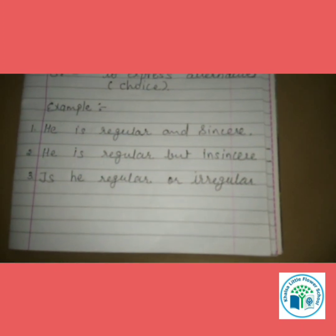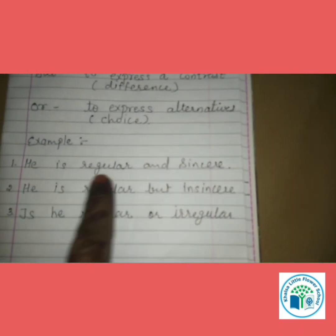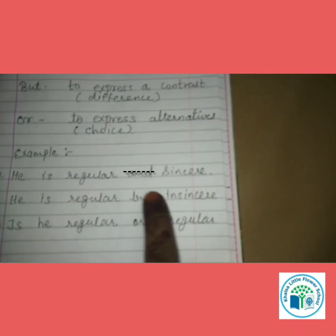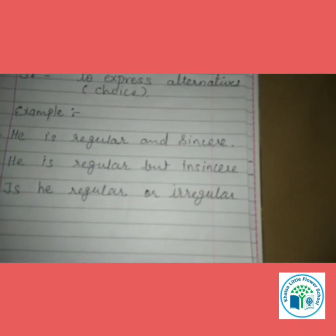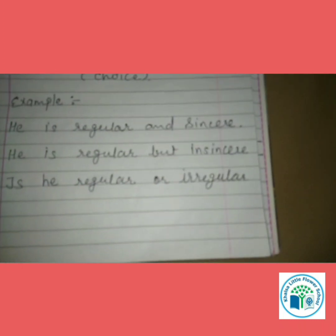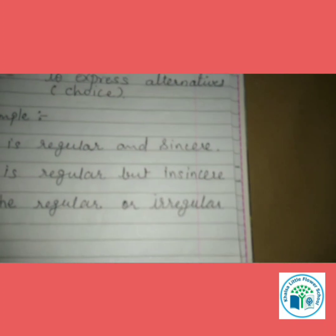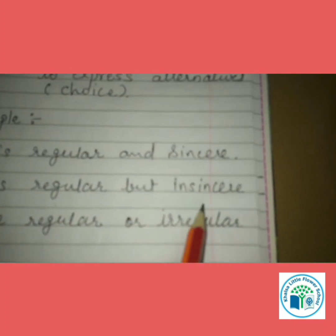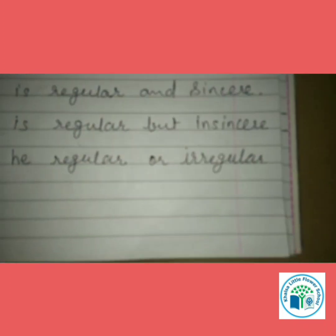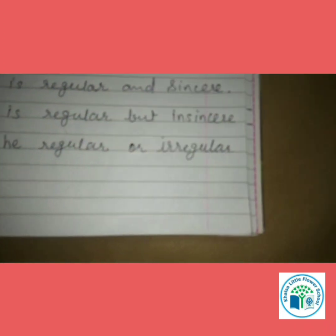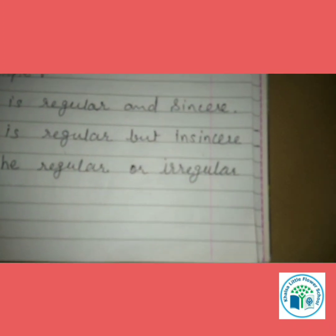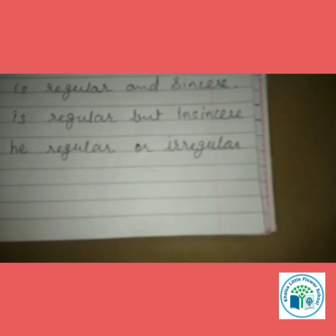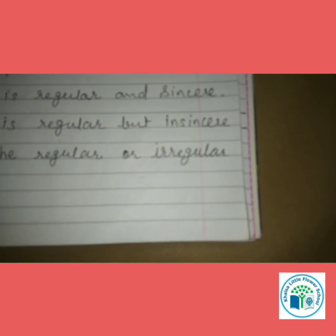For example, using the same sentence with all three Conjunctions: 'He is regular and sincere' — woh regular bhi hai aur sincere bhi. 'He is regular but insincere' — woh regular toh hai lekin sincere nahi. 'Is he regular or irregular?' — yahan pe alternative aagya. Right?